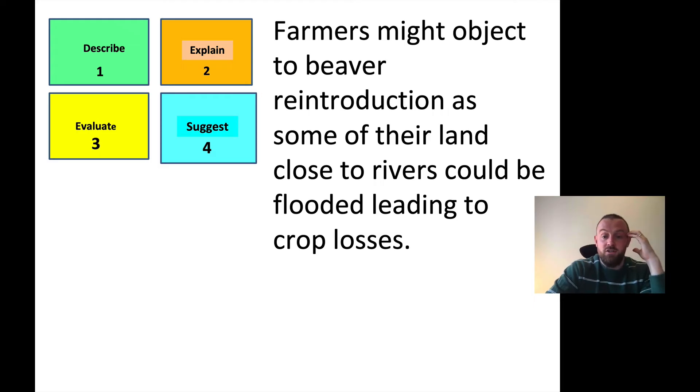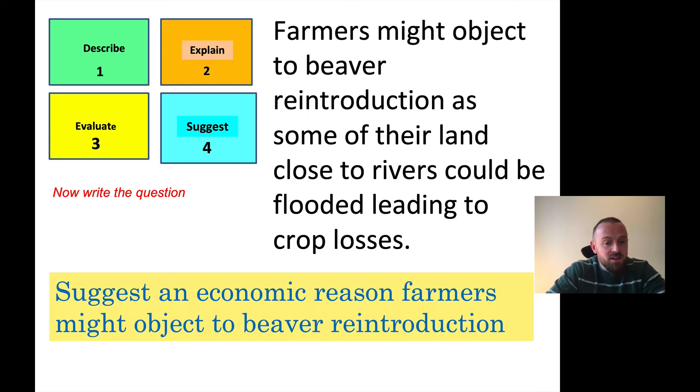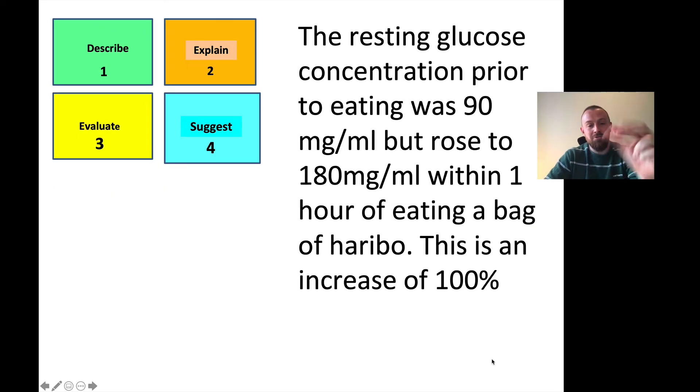Farmers might object to beaver reintroduction as some of their land, close to rivers, could be flooded, leading to crop losses. What do you think? Well, the clue is might, so it's probably suggest. But what would be the question? Here we go: suggest an economic reason farmers might object to beaver reintroduction. So that's an economic reason. OK, two more. Stick with me.